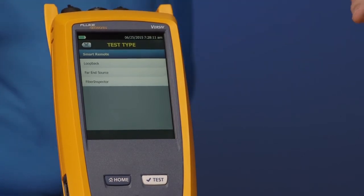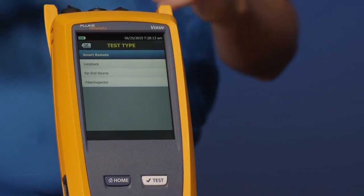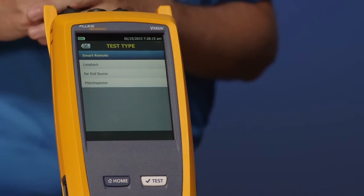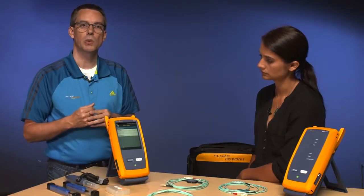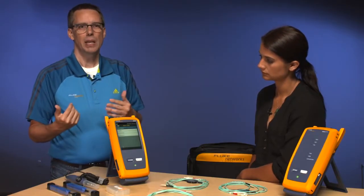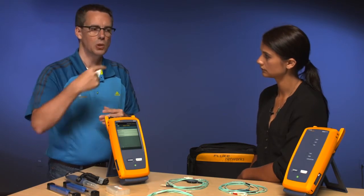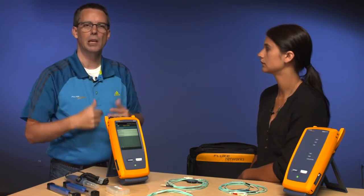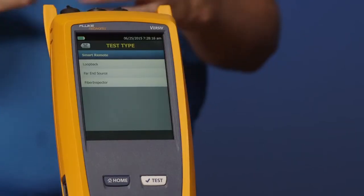There is Smart Remote, where we're using the remote tester there, and we're testing two fibers at the same time. The other one on here is also Loopback. Loopback, you're typically not going to use. And that's exactly what it suggests. You're going to loopback the fiber at the far end and it comes back into the instrument.